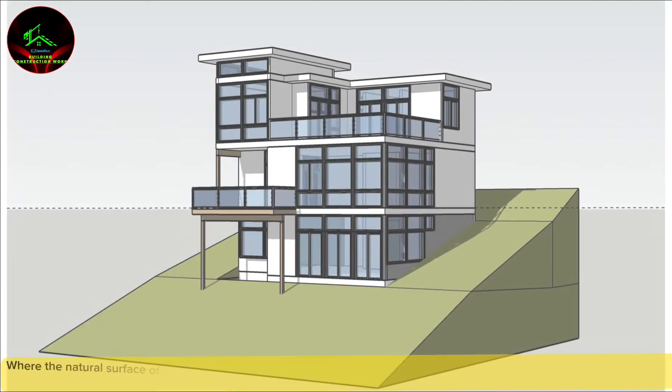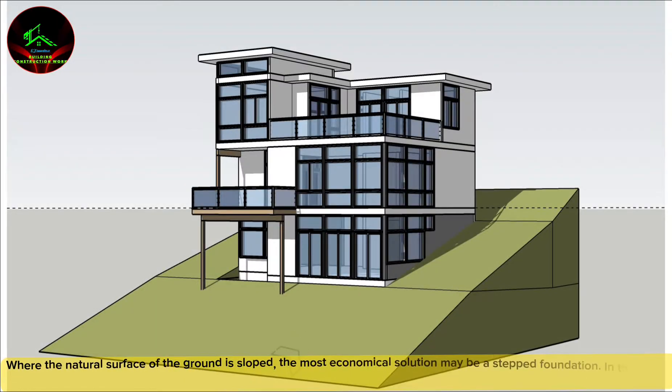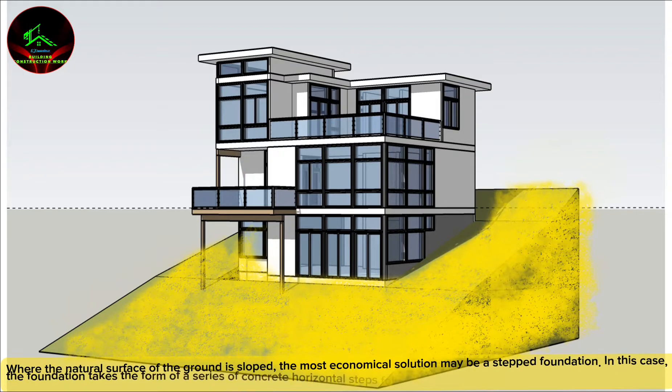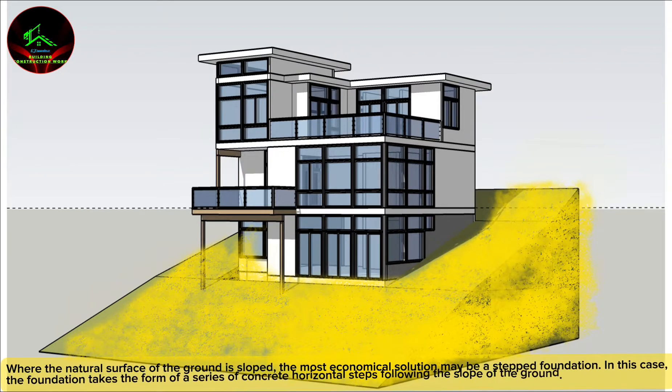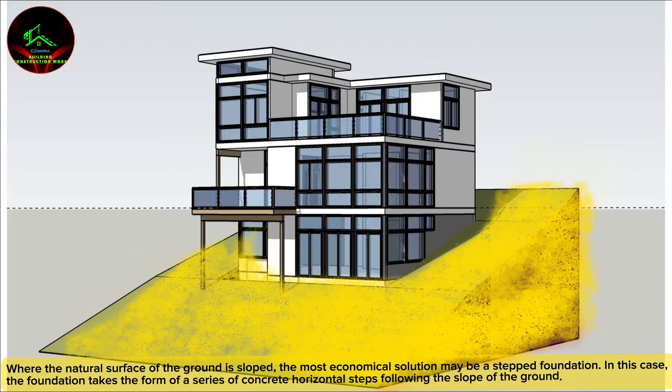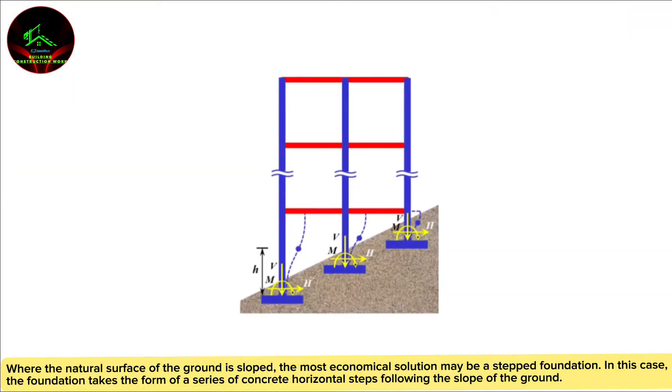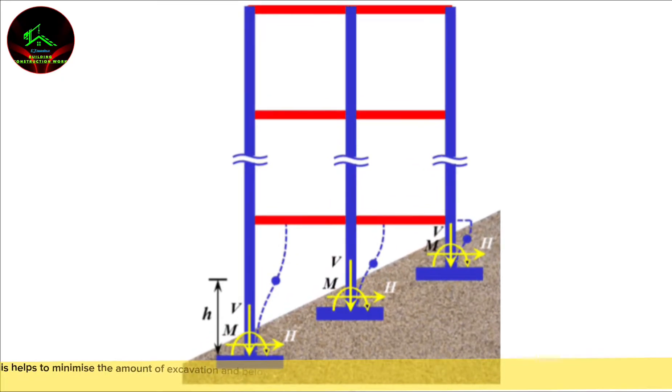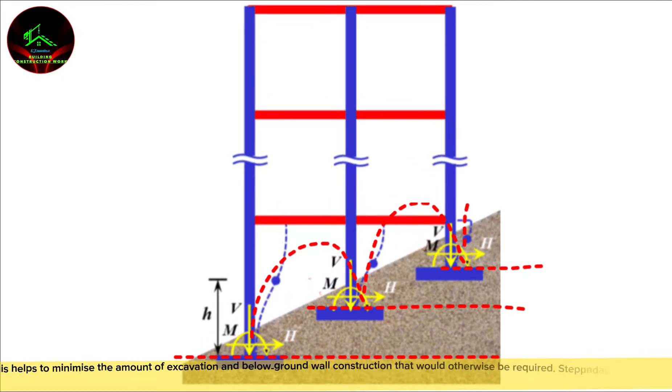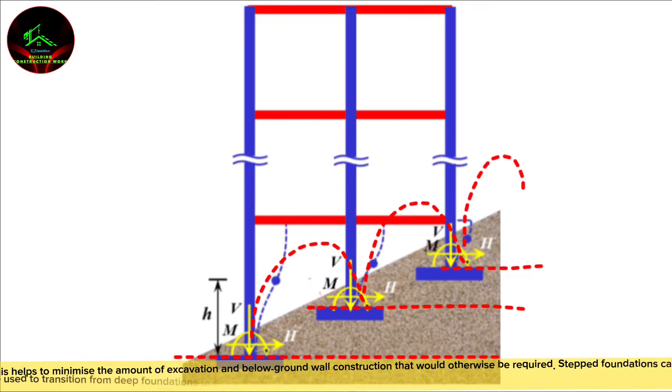Where the natural surface of the ground is sloped, the most economical solution may be a stepped foundation. In this case, the foundation takes the form of a series of concrete horizontal steps following the slope of the ground. This helps to minimize the amount of excavation and below-ground wall construction that would otherwise be required.